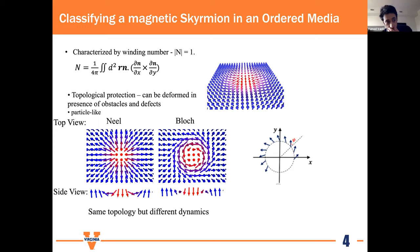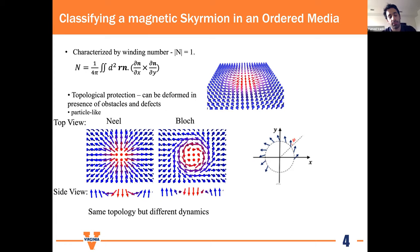Another property of skyrmions is their domain wall angle, which separates them into two types: Neel skyrmions and Bloch skyrmions. Although they are topologically equivalent, the difference is that for Neel skyrmions, the domain wall angle is zero or 180 degrees compared to the radial direction, while for Bloch skyrmions it is perpendicular to the radial direction — 90 degrees. We will see later what difference this makes.